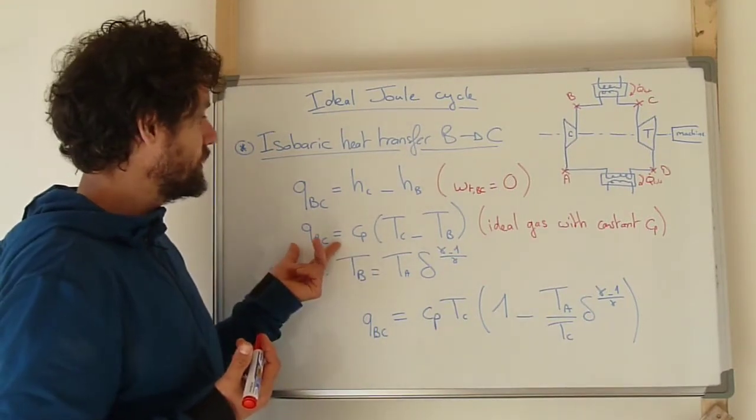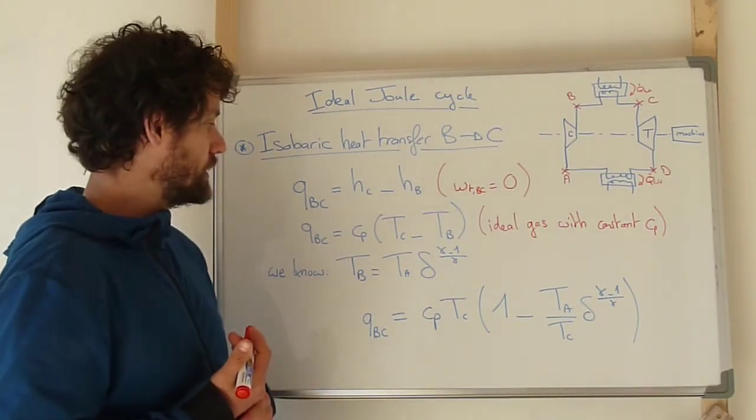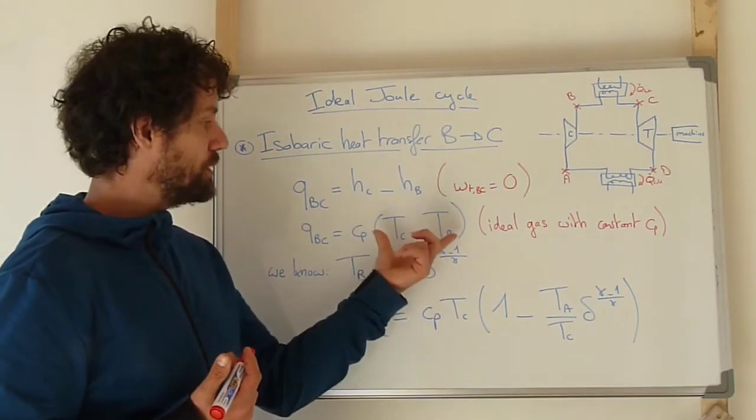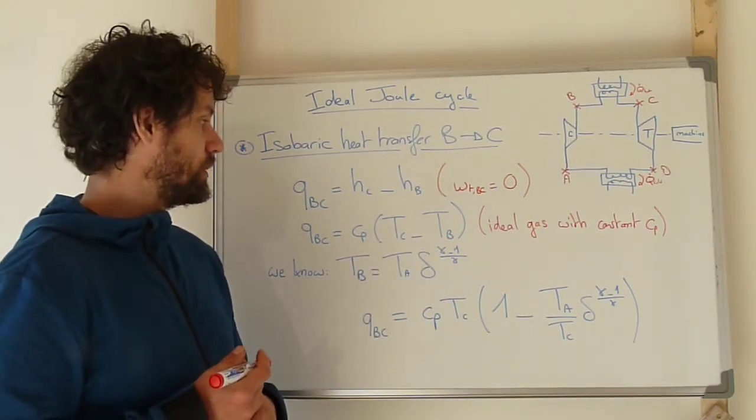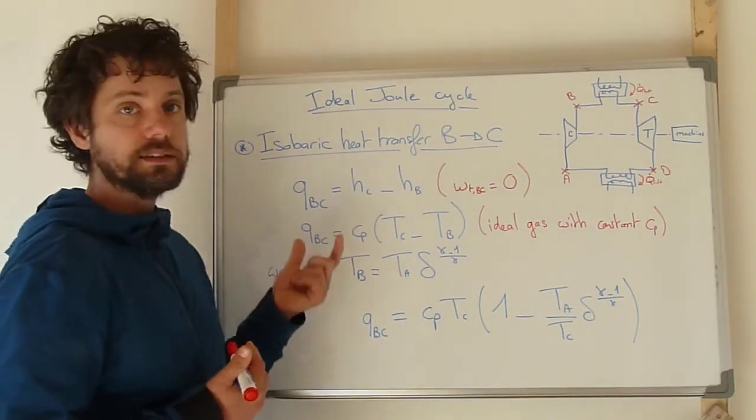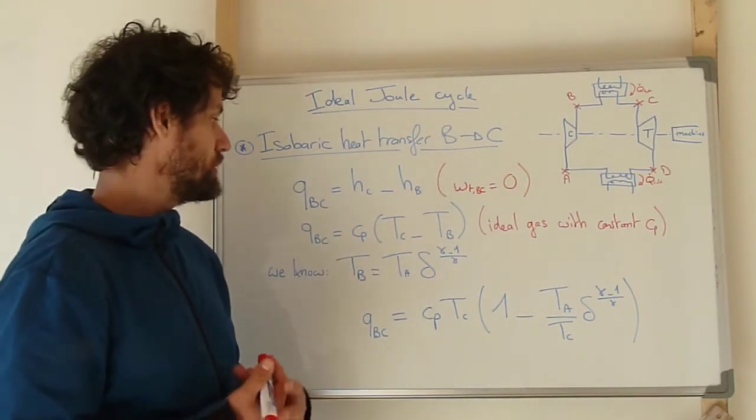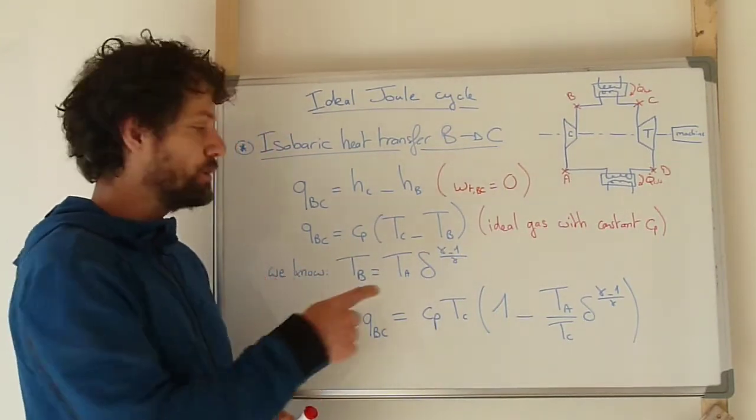We can express this heat received by the gas as the product of the Cp times the variation of temperature between B and C. And once again, we want to express this only as a function of input parameters. So Cp is an input parameter because it's the property of the fluid.